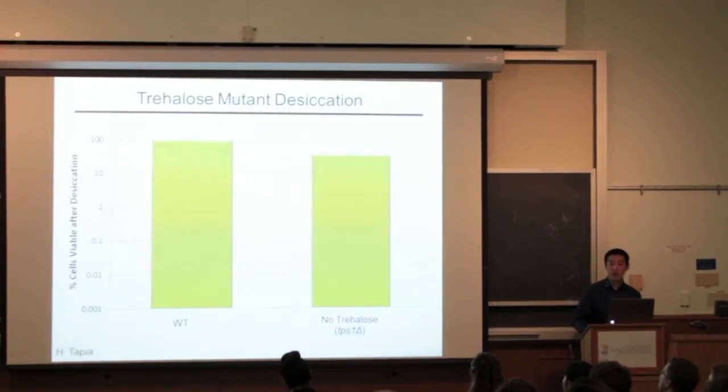Previous work done by Dr. Tapia in the Koshland Lab has shown that when the trehalose biosynthesis pathway was inactivated, TPS1 delta, there was no significant change in tolerance.